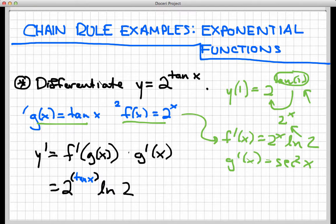So 2 to the tangent x times the natural log of 2, times, all of this, times the derivative of g, which we said was secant squared x. There is no real simplification I can do on this, so I'm just gonna leave it right here. So the answer here is 2 to the tangent x, times the natural log of 2, times secant squared of x.